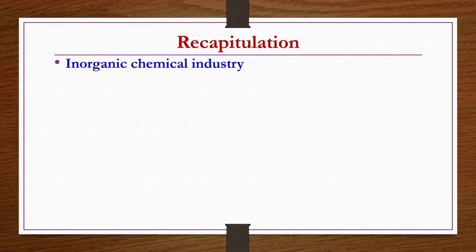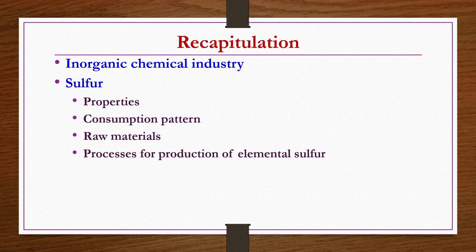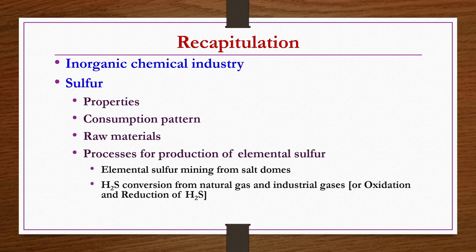In the previous lecture, we saw a few basic comparisons between inorganic and organic chemical industry, then started discussing about sulphur — its pertinent properties, consumption pattern, raw materials available for its production, and processes for the production of elemental sulphur. There are three processes: elemental sulphur mining from salt domes, H2S conversion from natural gas and industrial gases, and production from iron pyrites.